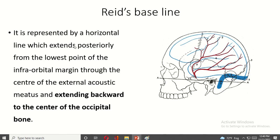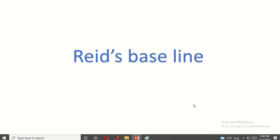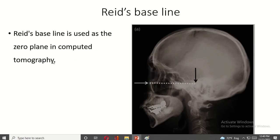Riesby's Line. It is represented by a horizontal line which extends posteriorly from the infra-orbital margin, through the center of the external acoustic meatus, and backward to the center of the occipital bone. It is used as the zero plane in computed tomography.